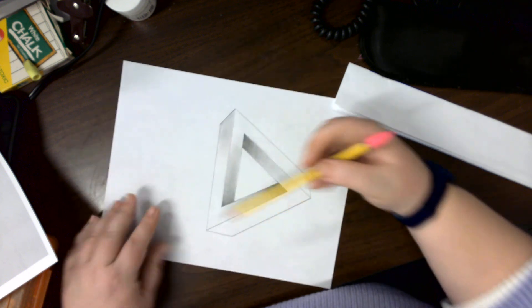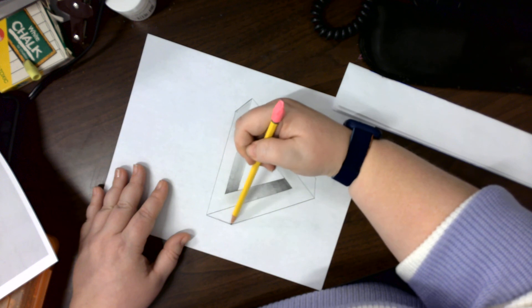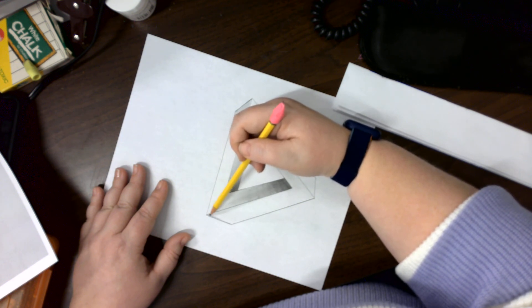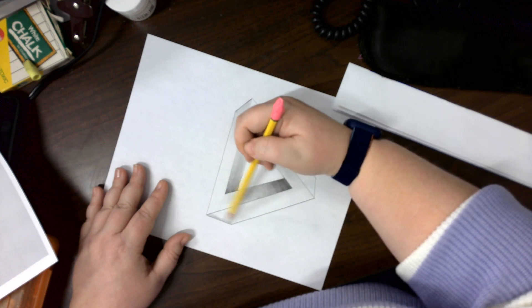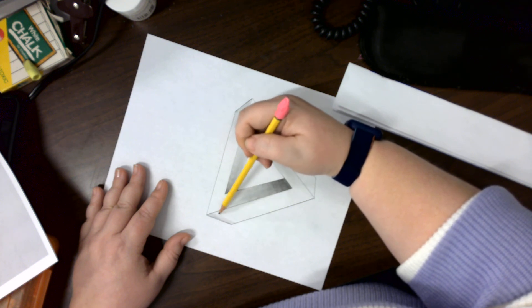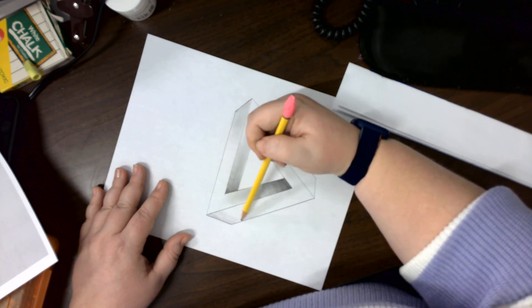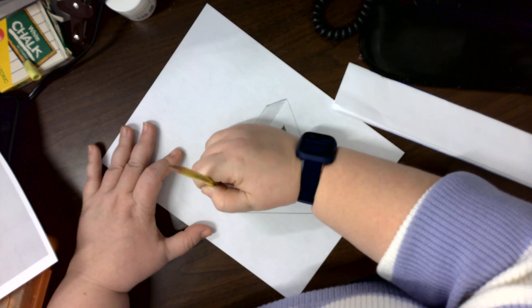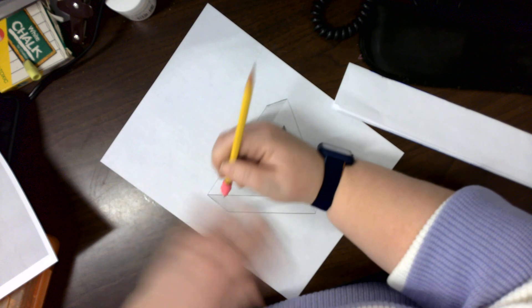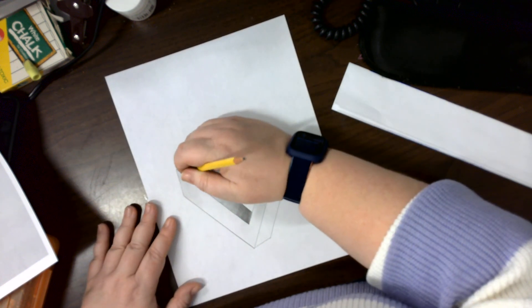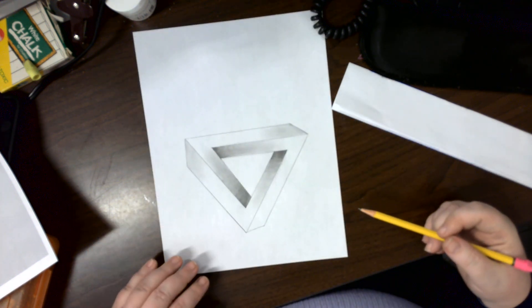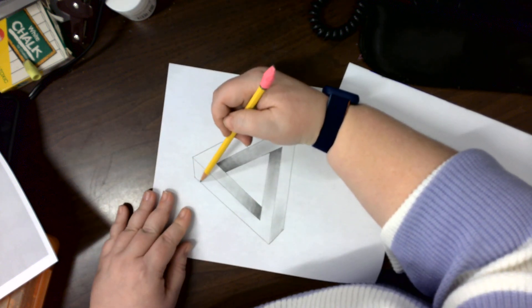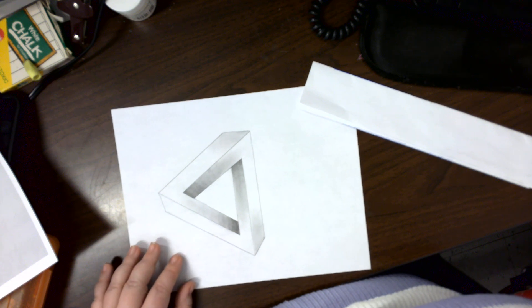We're going to do the same thing here, just add a little value to it so it doesn't look like a flat outline. Clean this up. And I'm going to do the same thing on this last corner.